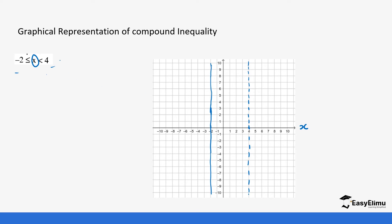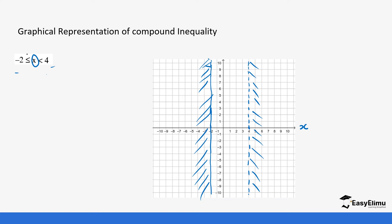The values of x are less than four, so anything above four is unwanted — we shade that region. All values of x are greater than negative two, so anything less than negative two is not wanted — we shade that region too. When you look at these two lines, the values of x can be anything in between them, including negative two. That is how we represent a compound inequality.